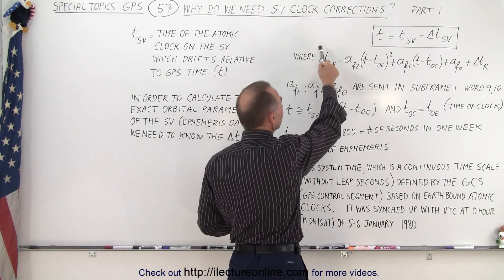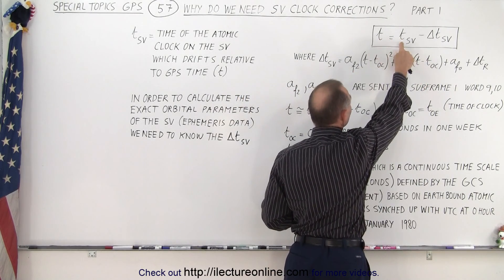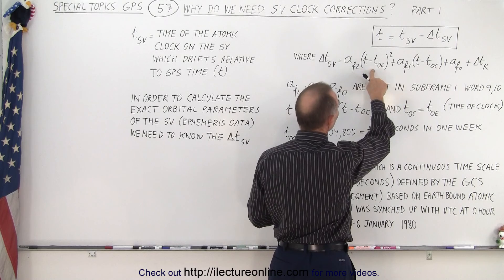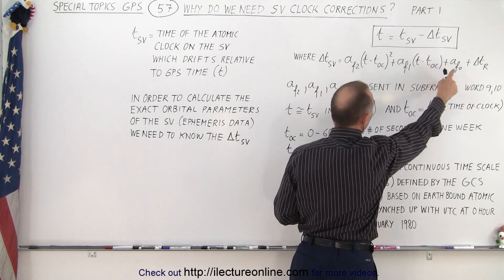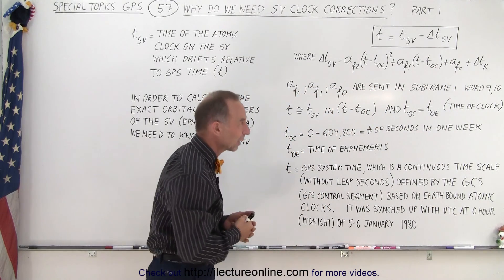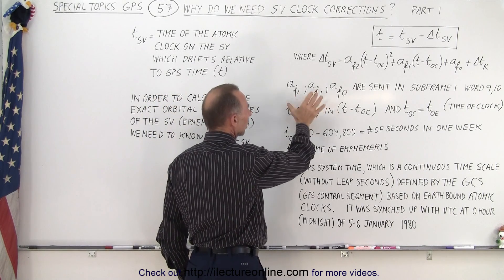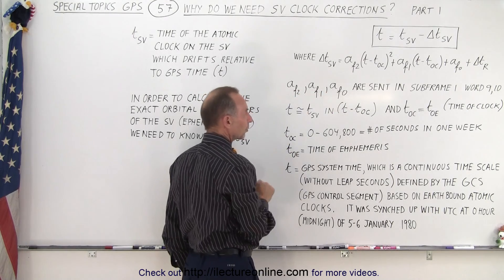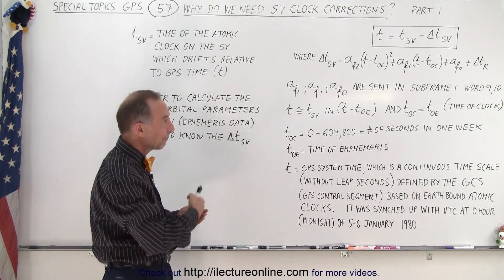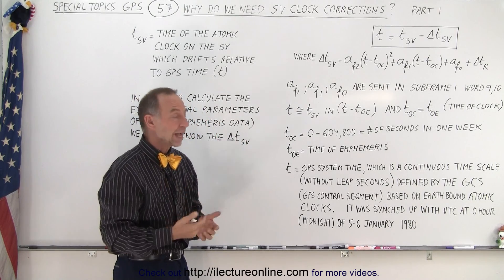Here's the equation where we calculate delta t — the difference between the real GPS time and the time on the space vehicle. It looks a lot like a quadratic equation: some constant times this squared, plus another constant times this to the first power, plus a constant term, plus a delta t for the relativistic effect. The three constants af2, af1, and af0 — belonging to the squared term, first power term, and zero power term — are sent in subframe one, words nine and ten, every 30 seconds.